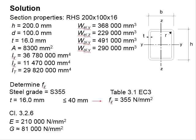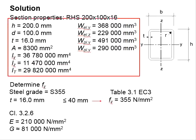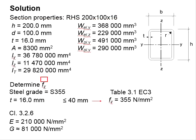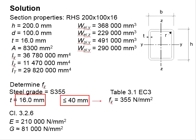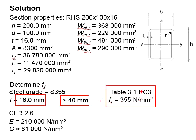Next, determine the section properties of the member. Search the table of properties and record all relevant section properties for the given section. Then determine the yield strength. The steel grade is 355 and the thickness is 16 mm, which is less than 40 mm. Therefore, according to Table 3.1, the yield strength is equal to 355 N/mm².